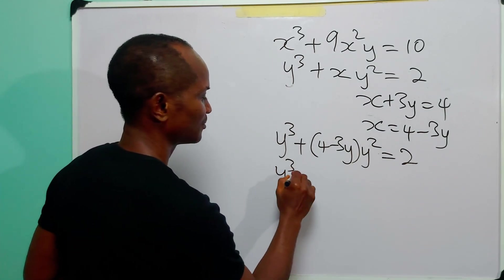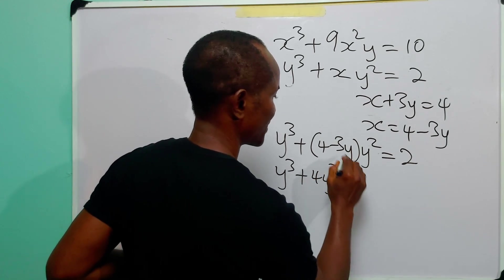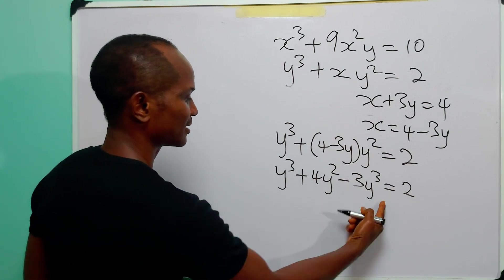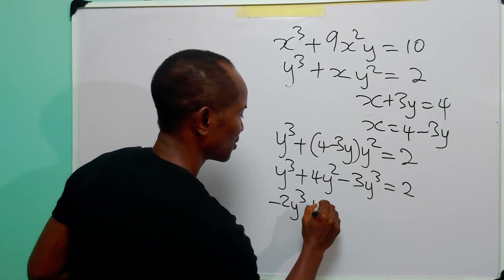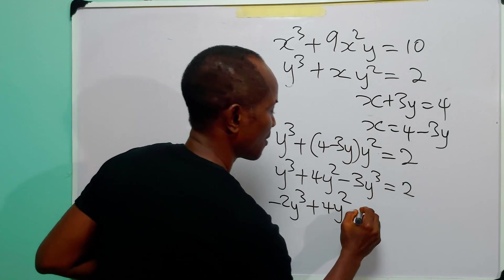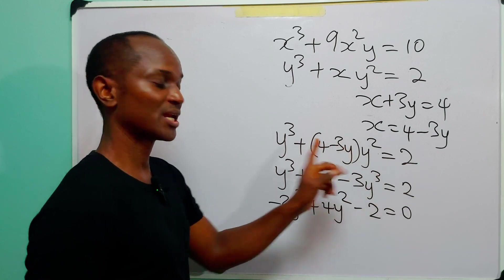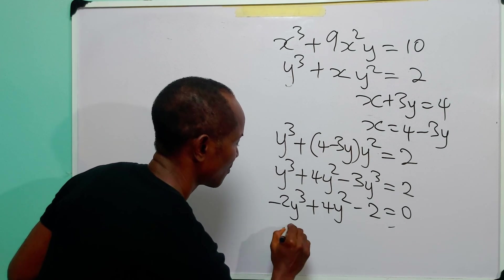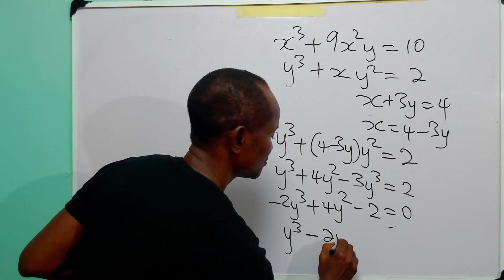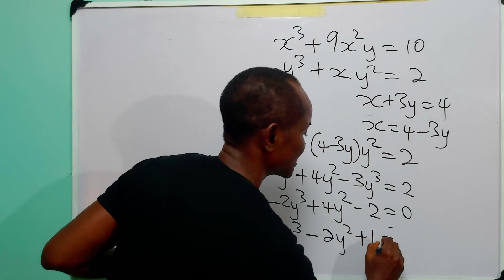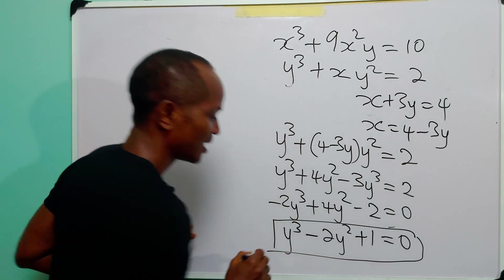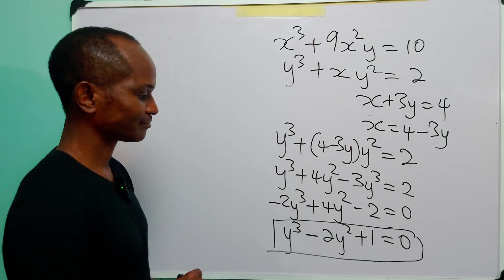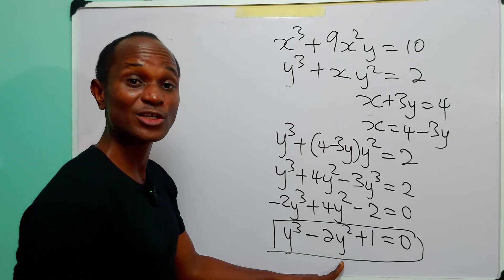Expanding: y³ + 4y² − 3y³ = 2. Collecting like terms: −2y³ + 4y² − 2 = 0. Dividing through by −2: y³ − 2y² + 1 = 0. This is much simpler than the first equation we obtained.